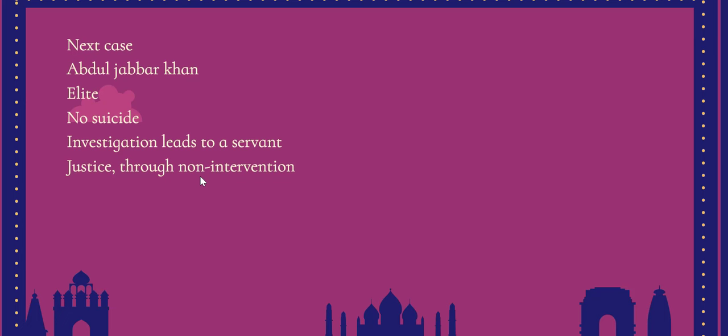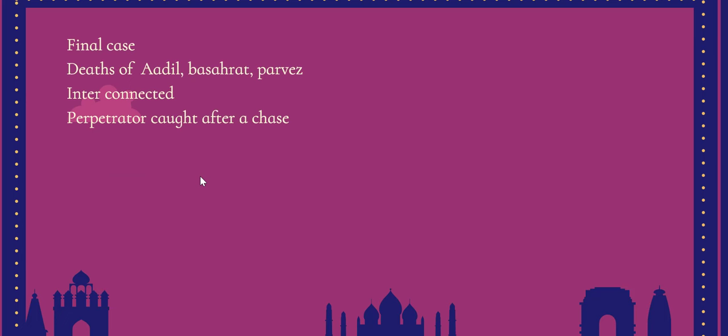This case prompts reflection on what justice means and how it should be delivered. It is also an interesting insight into the Mughal era: we now assume the right to life is a basic human right, but back then a child could legally be flogged to death by their master with no state intervention. These are the ways in which the novel makes you ponder history as you read it.